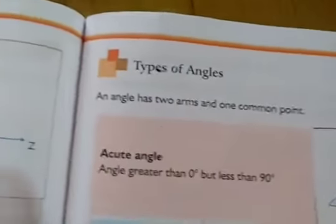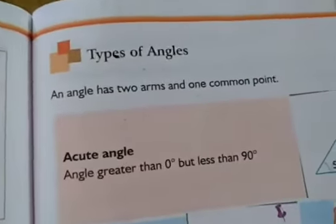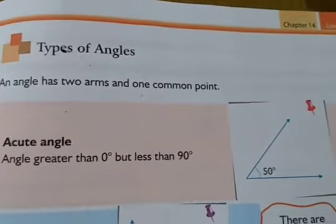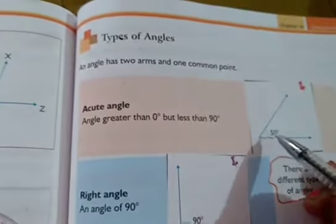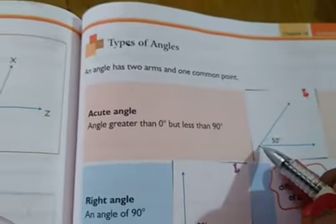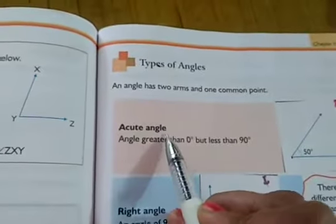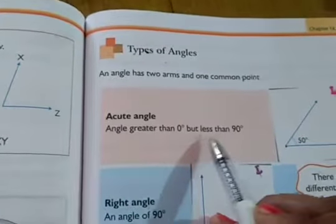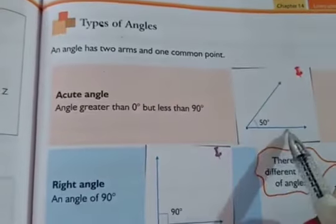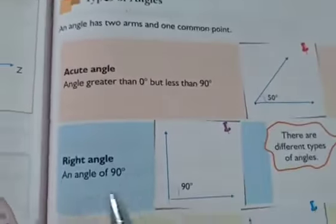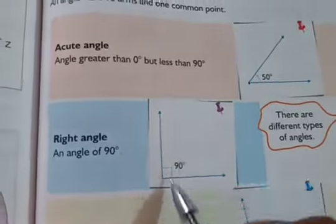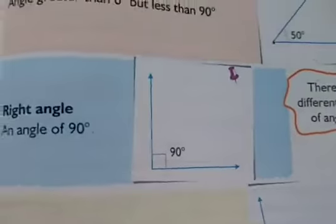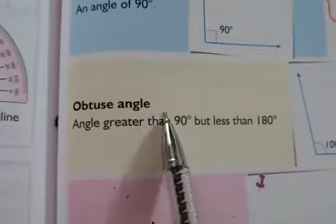Types of angles. An angle has two arms and one common point — arm 1, arm 2, and this is the vertex. An acute angle is an angle greater than 0 degrees but less than 90 degrees. A right angle is an angle of measure 90 degrees — this is called a right angle.